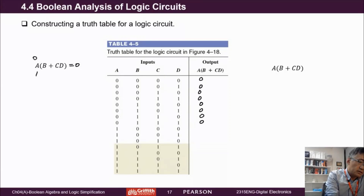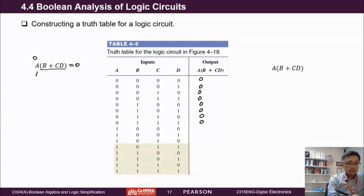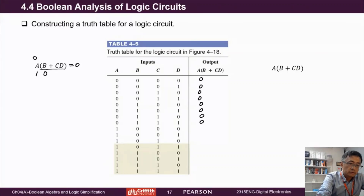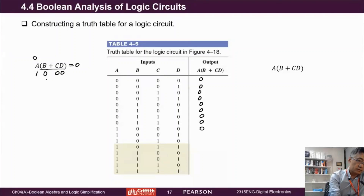What if A is one? If A is one, then we need to think about the remaining part. If that part is zero, the output will be zero. So how can we make this part zero? If B is zero, then C and D give zero plus zero, making sure the overall part is zero, which means the output will be zero.